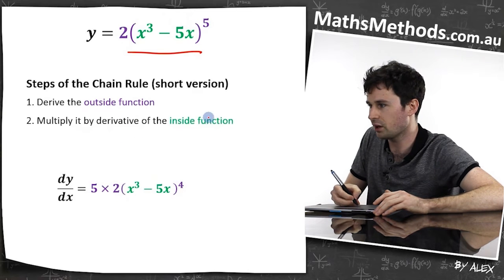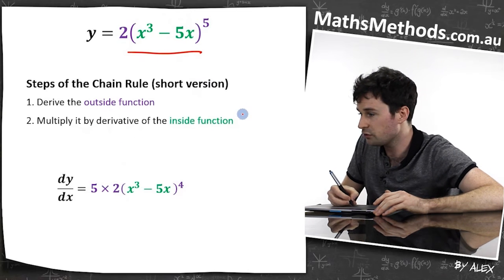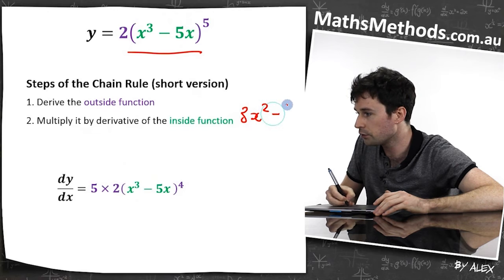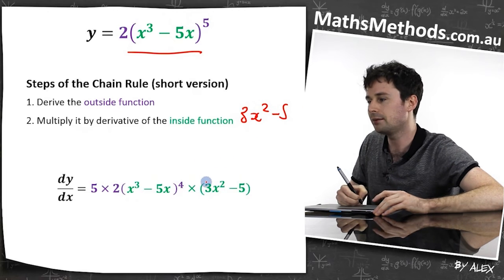Two, multiply it by the derivative of the inside function. Okay, so derivative of the inside function is 3x² - 5, okay, just multiply it by that. Done.